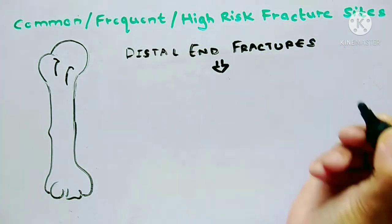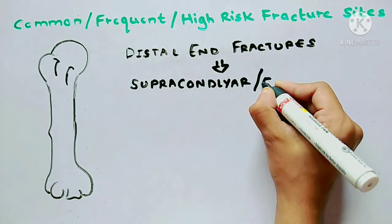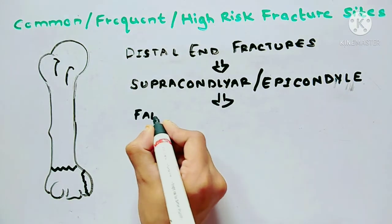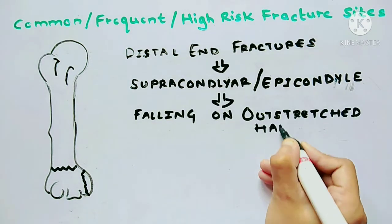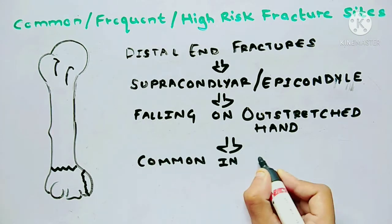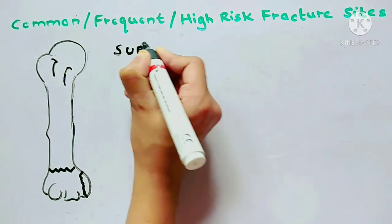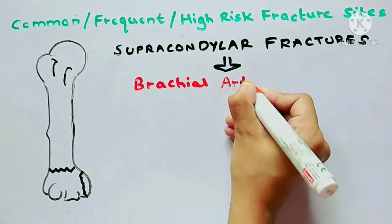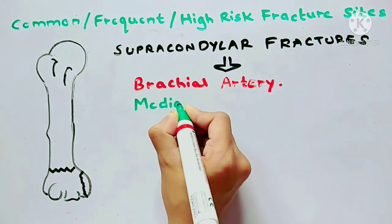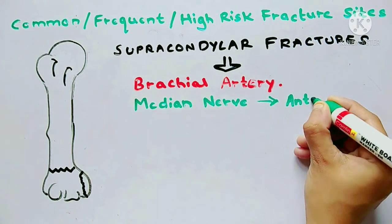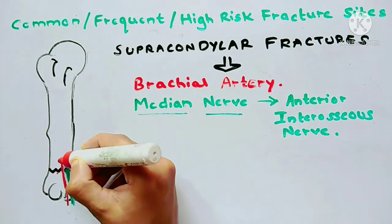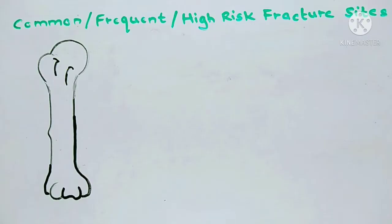The second type of fracture site is at the distal end of the humerus, where the likely structures to fracture are the supracondylar ridge and the epicondyle region. The most common mechanism of injury is falling on an outstretched hand, and it is more common in children than in adults. For supracondylar fractures, the potential damage occurs to the brachial artery and the anterior interosseous nerve, which is a branch of the median nerve. In the image, green is the median nerve and red is the brachial artery.